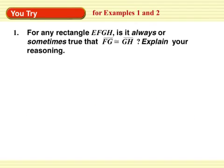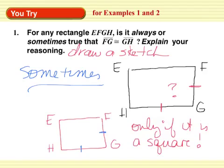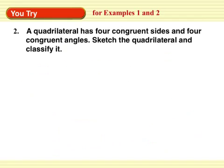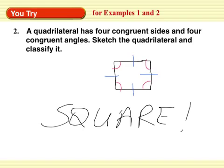You try: for any rectangle EFGH, is it always or sometimes true that FG is congruent to GH? This statement would only be true if rectangle EFGH is a square — so it is sometimes true. Next: a quadrilateral has four congruent sides and four congruent angles — sketch and classify it. The only thing it could be is a square.